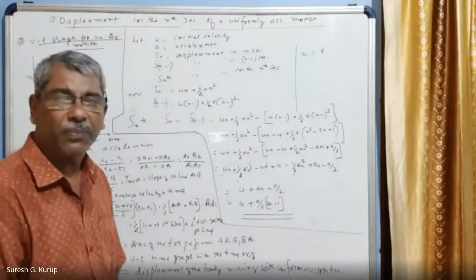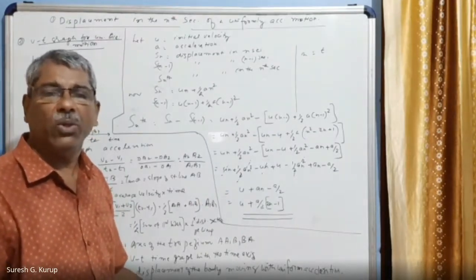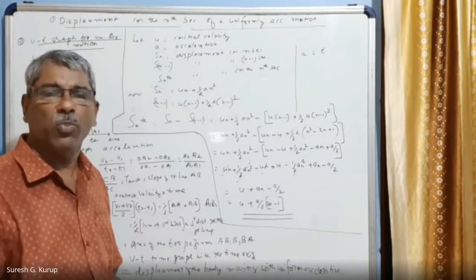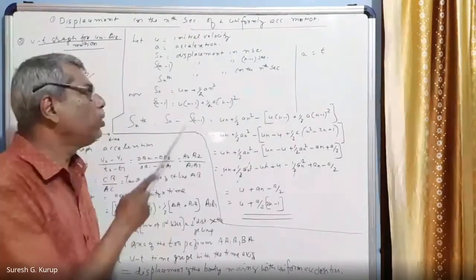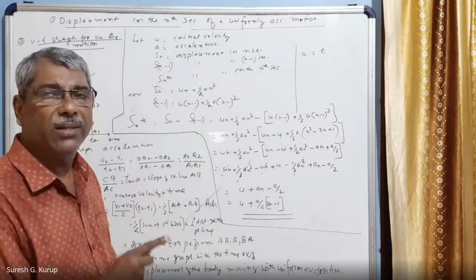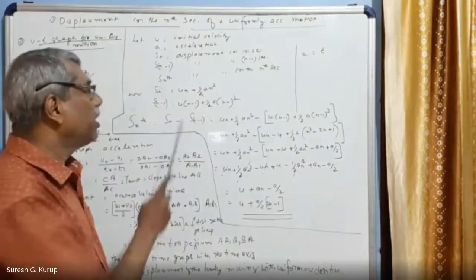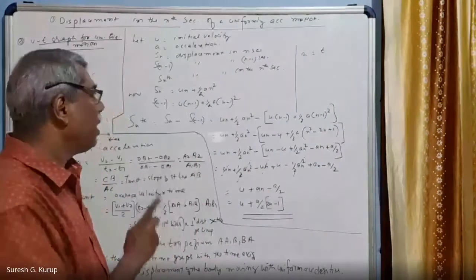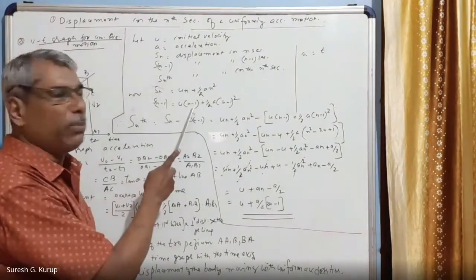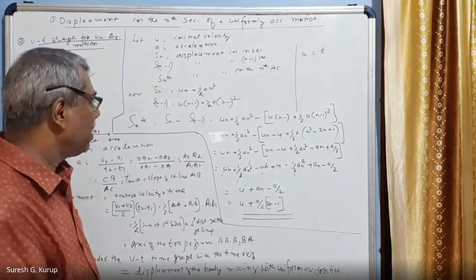To find the displacement in the 10th second, we calculate the total displacement in 10 seconds minus total displacement in 9 seconds. Using the notation S_n, the total displacement in n seconds is S_n = un + ½an². And S_(n-1) = u(n-1) + ½a(n-1)².